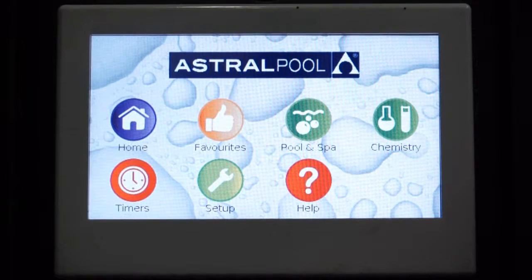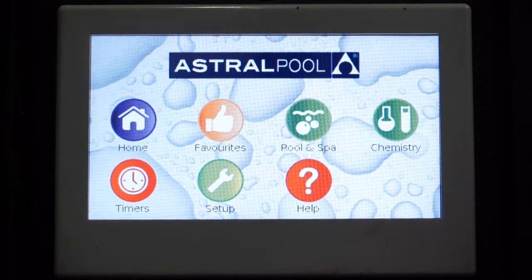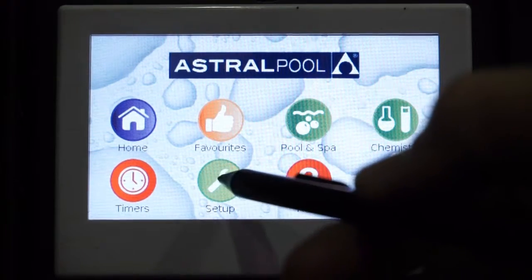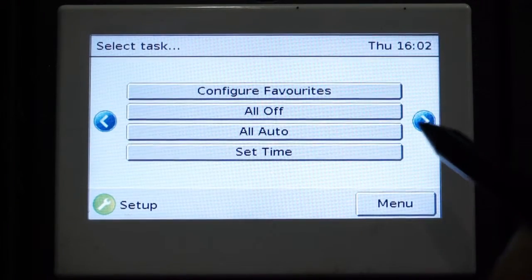Today we're going to set up our solar function on our Vyron Connect 10 Pool and SPAR controller. So first of all, from your menu screen, select Setup.